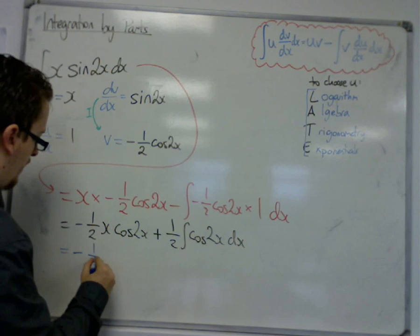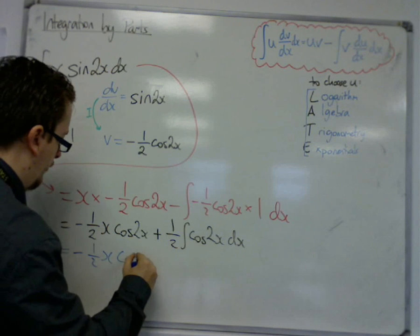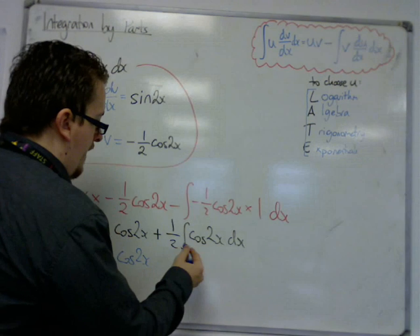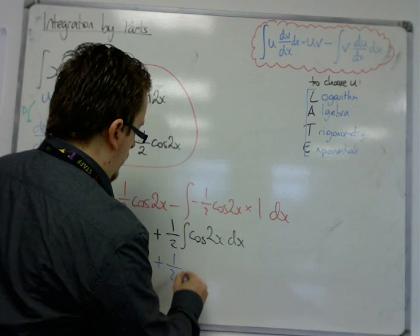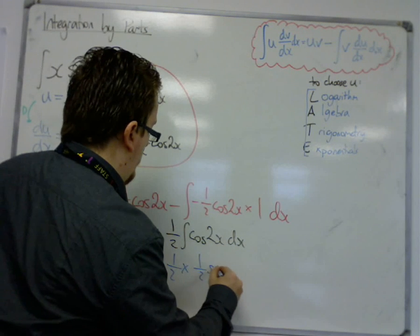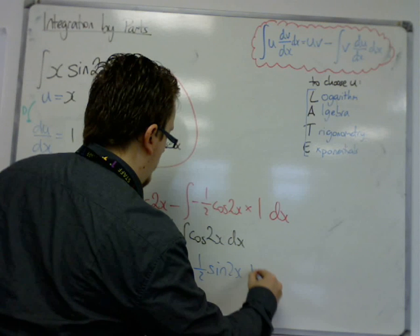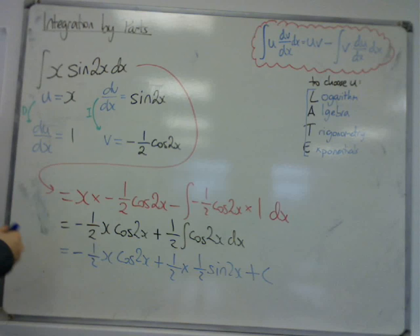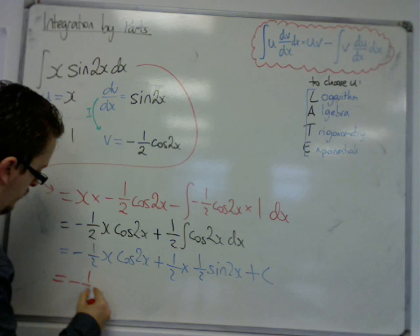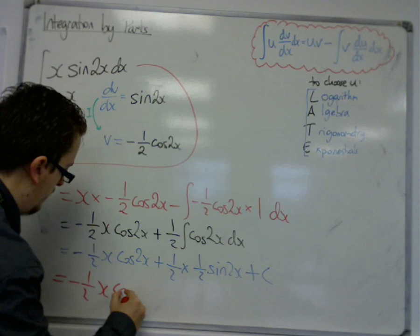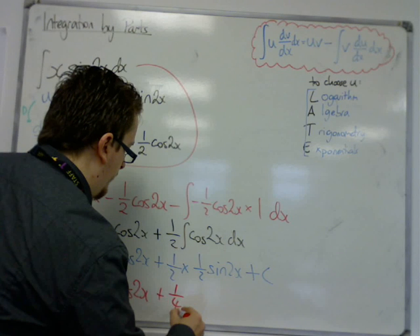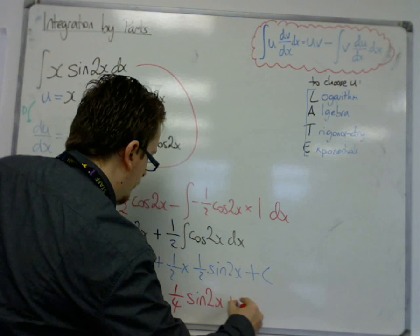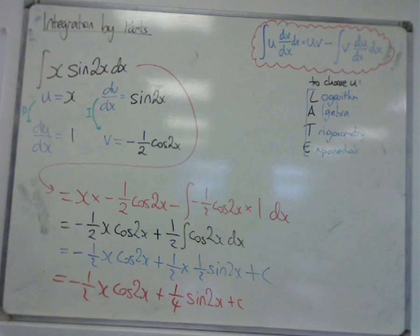Then I'm going to have minus 1/2 x cos 2x, and then I'm integrating cos 2x, so that's 1/2 sin 2x plus the constant term c. And a final tidying, just to deal with that second term. So 1/2 times 1/2 is a quarter.